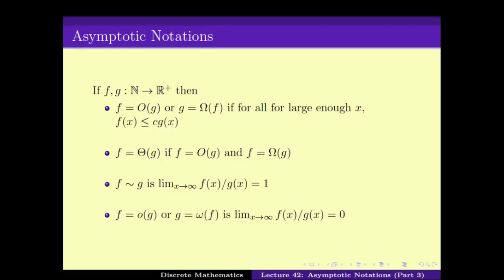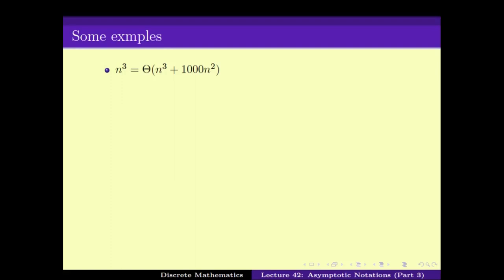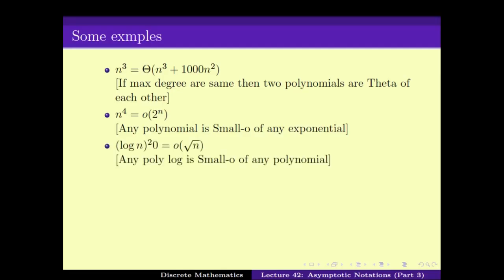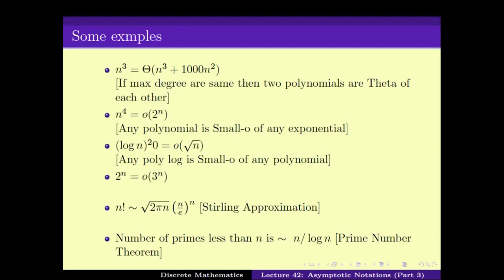With this set of asymptotic notations in hand, we can now try to solve recurrence relations. There are some examples we did last time: when comparing two polynomials, all we have to look at is the maximum degree. Similarly, a polynomial is always little-o of the exponential, and a polylog is always little-o of any polynomial. 2^n is little-o of 3^n. We also looked at useful asymptotic approximations, particularly that n! is asymptotically equal to √(2πn) · (n/e)^n.